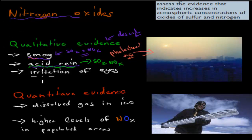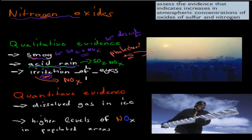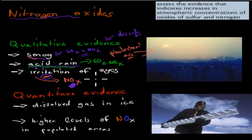There is also a lot more eye irritation in these areas. The oxides of nitrogen, especially nitrogen monoxide, cause irritation of the eyes — eyes become watery and really irritated. In areas that have lots of photochemical smog, people are suffering from this eye irritation, which suggests that this photochemical smog contains our oxides of nitrogen. These are qualitative evidence — not numbers, but a way to gauge the increase.